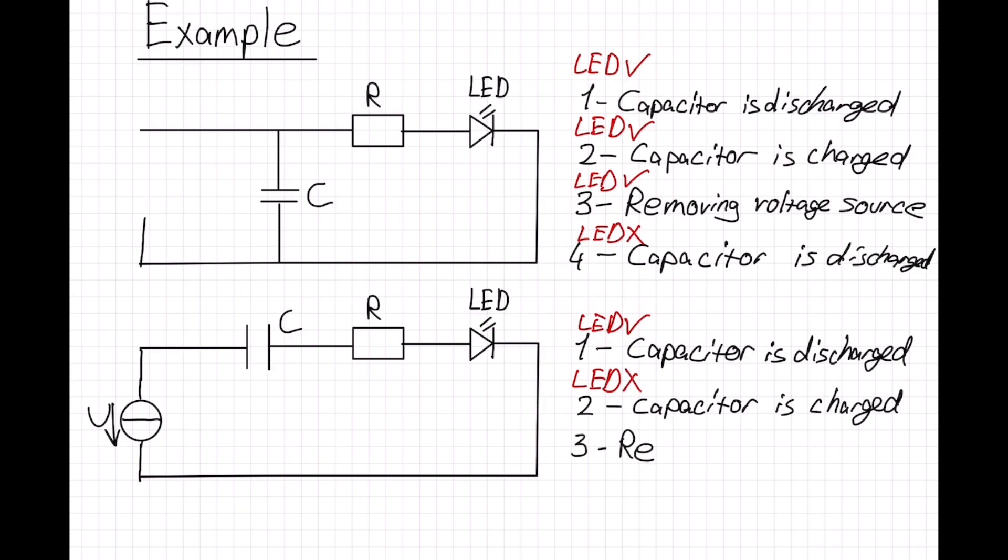At the third stage, we are removing our voltage source from the circuit. Because we don't have a closed circuit, our LED doesn't turn on, it's off.